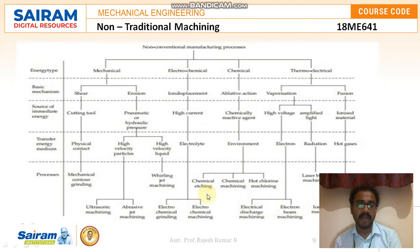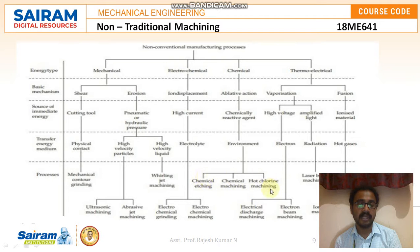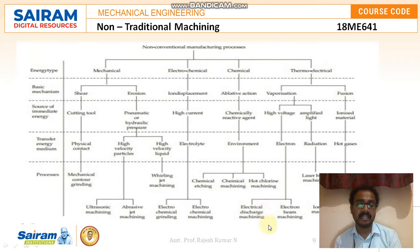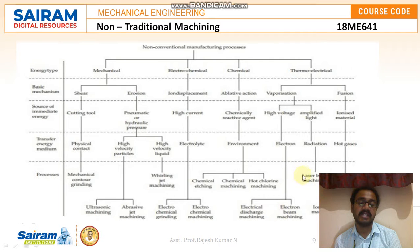Under chemical, there are three major categories: chemical etching, chemical machining, and hot chlorine machining. We will only be discussing chemical machining from these three. Under thermoelectrical, the two major categories are electrical discharge machining and electron beam machining — both of which we will discuss. Under radiation, laser beam machining is a very interesting topic that we will cover in our syllabus.